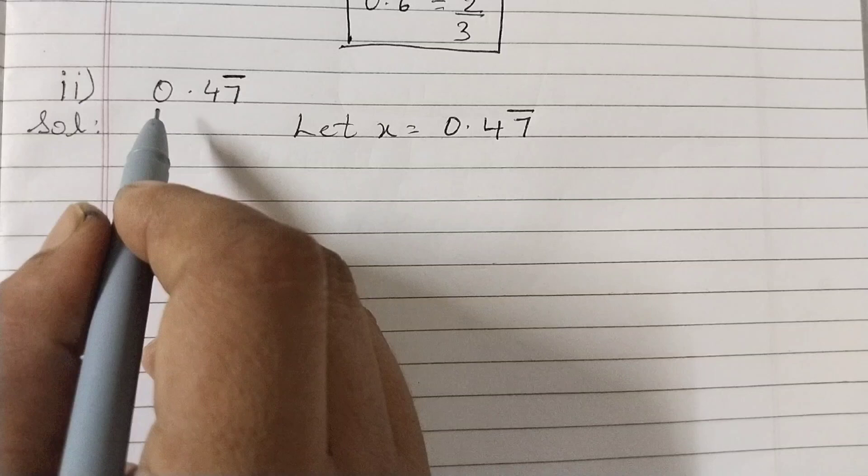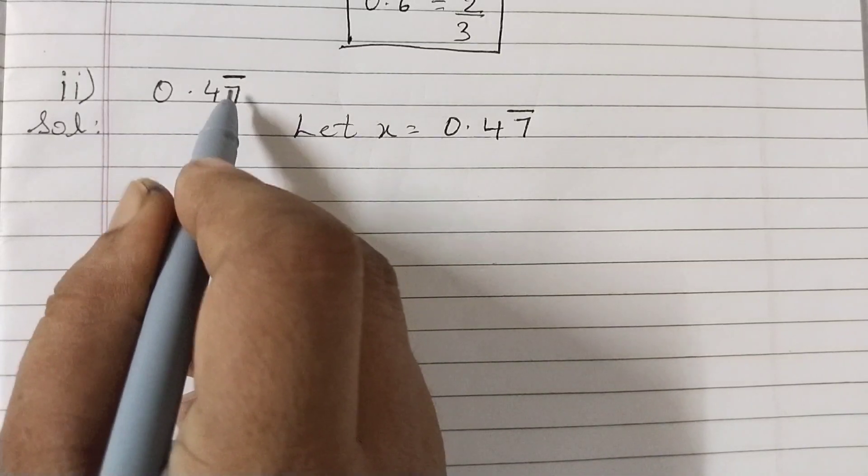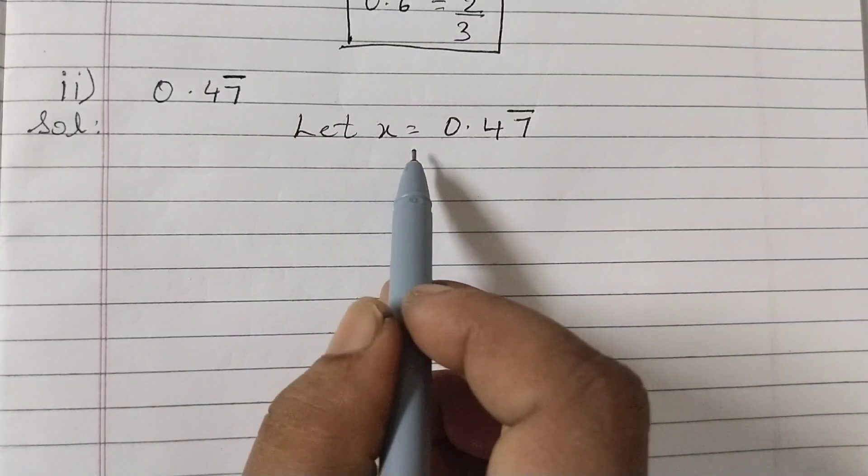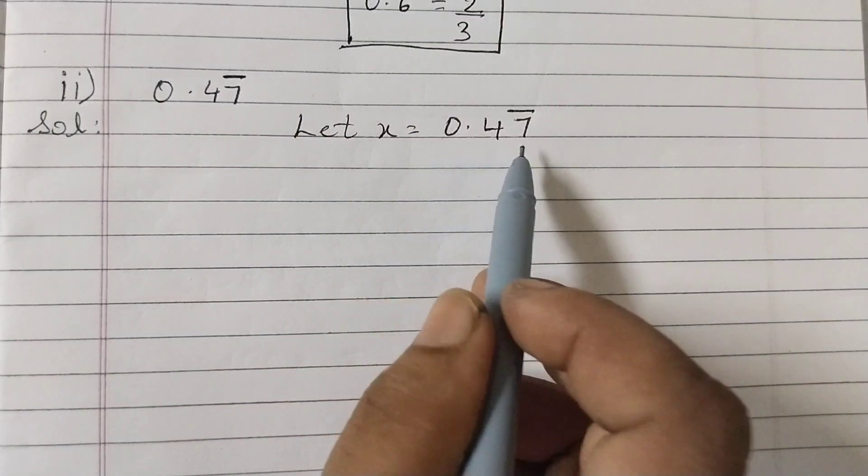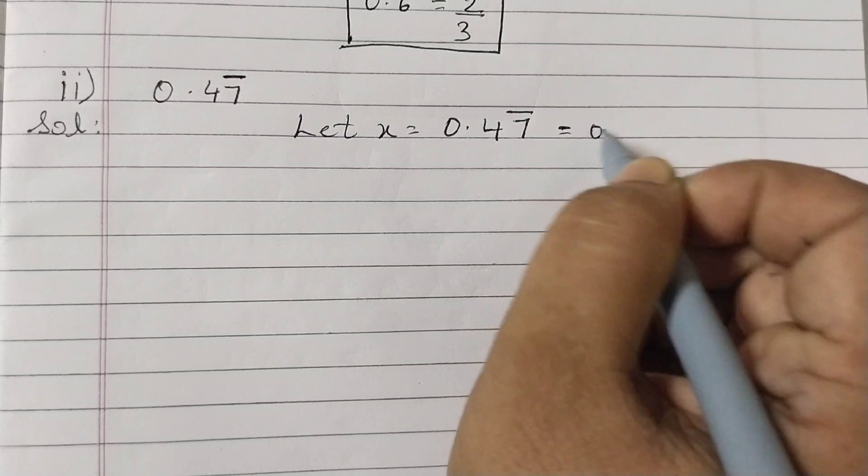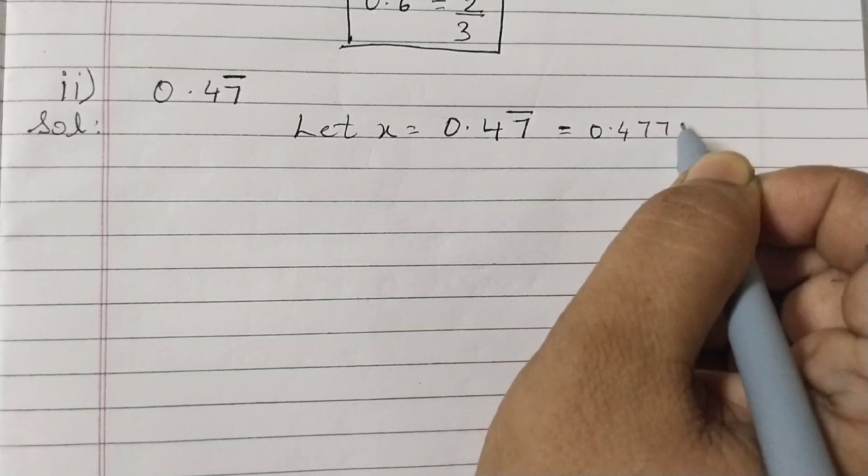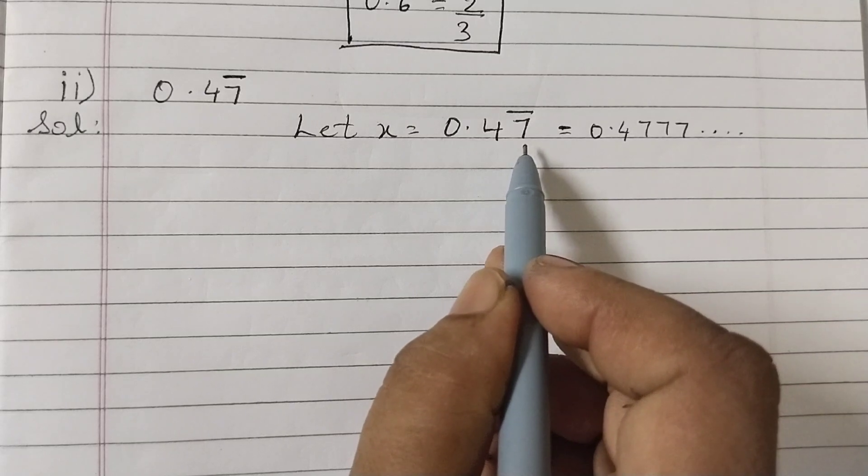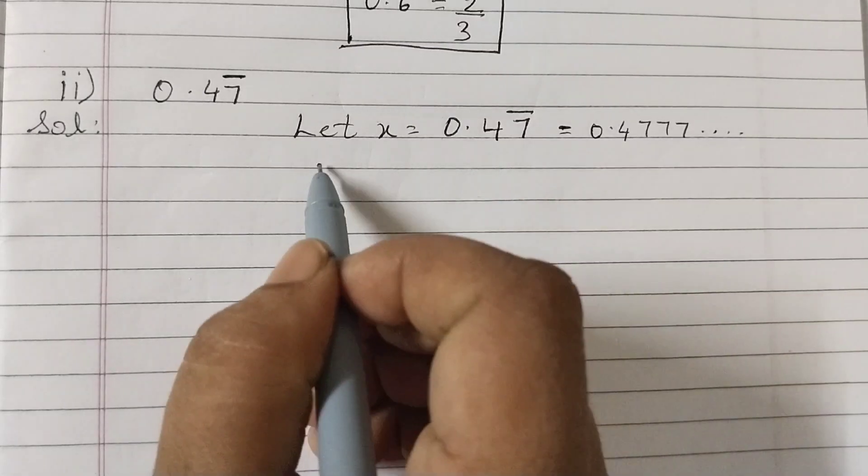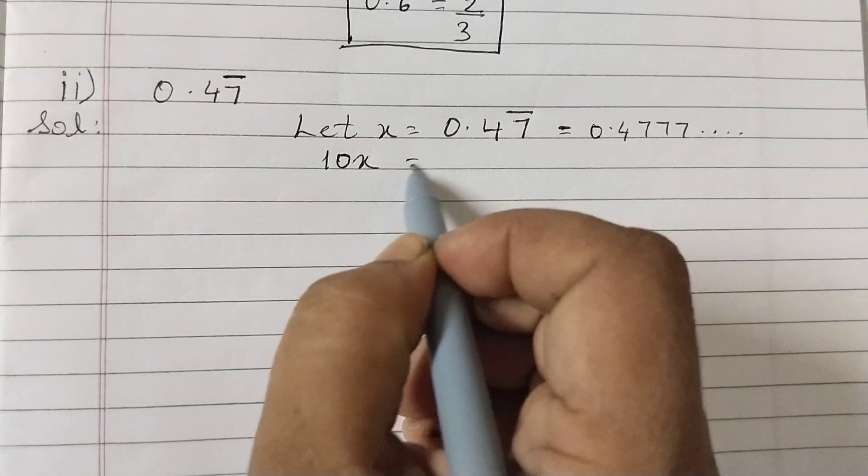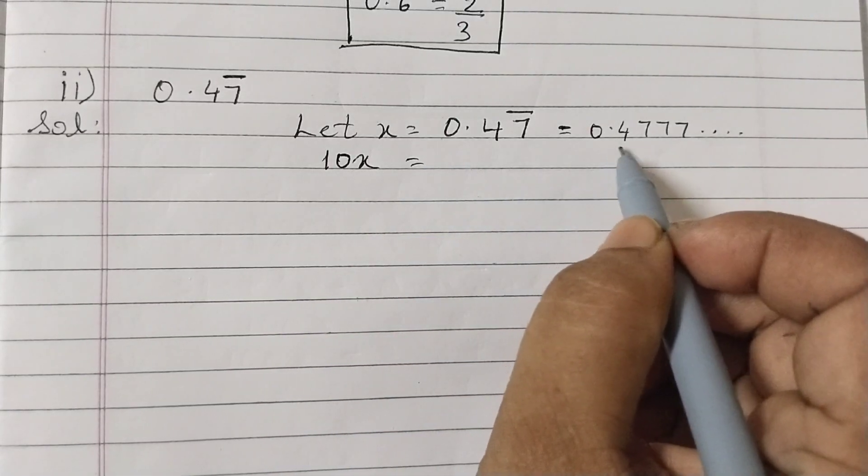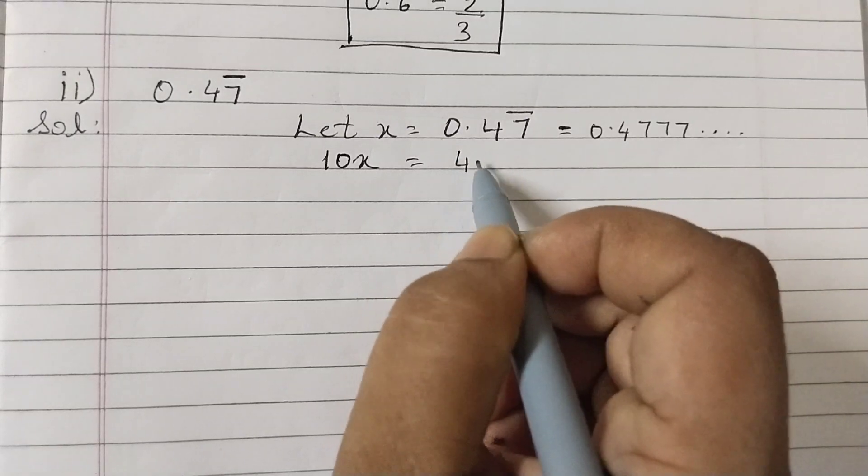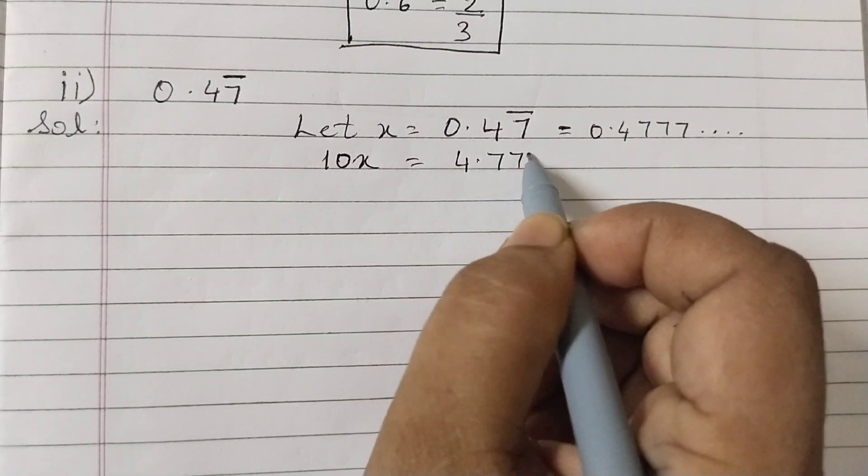Next one is 0.47̄. The bar is on 7, that means 7 is repeating itself. So let x equals 0.47̄, or 0.4777... Now one digit is repeating, so multiply by 10. 10 into x is 10x, and here the decimal point will shift one place to the right, so this would be 4.7777...